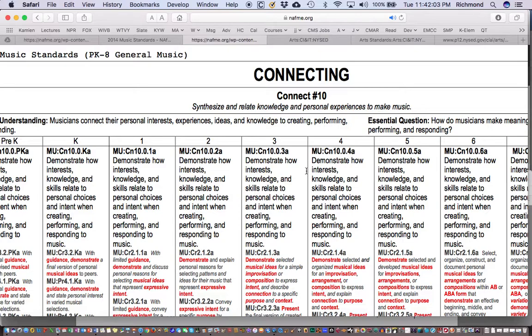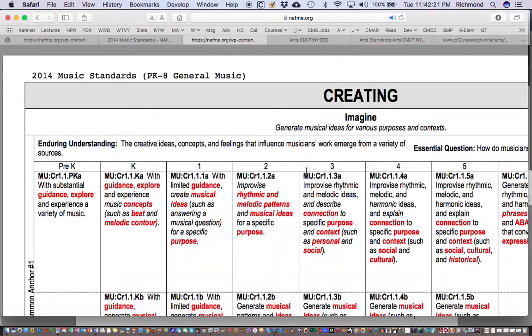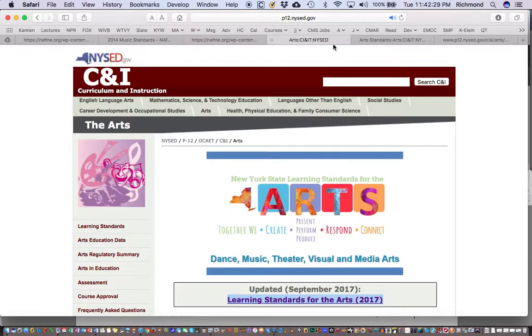I would expect you to know those in that order. Number one is creating, number two is performing, number three is responding, and number four is connecting. I'd like you to identify the NAFME standards in your lesson plans by simply saying NAFME 2014, number one, number two, number three, or number four. There's no need to write all of this out. I do highly suggest that every person actually come to and work with this document as well.